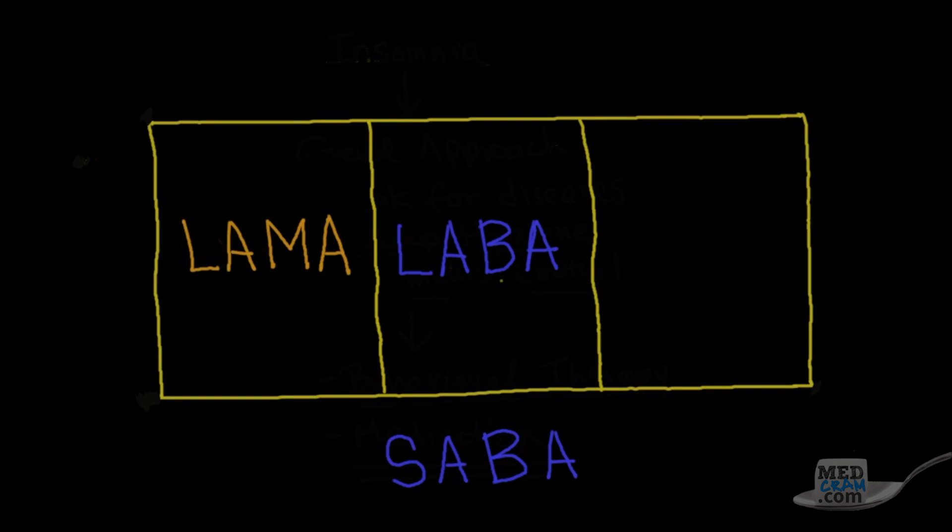And then finally we're going to look at the inhaled corticosteroids. So for those who don't remember, these are the ones that end in ONE. These are the ones that end in OL. And these are the ones that end in IUM. Remember glycopyrrolate is also in that category. So it's IUM, OL, and ONE. So why do I put this into this three-chambered box here with the SABA?